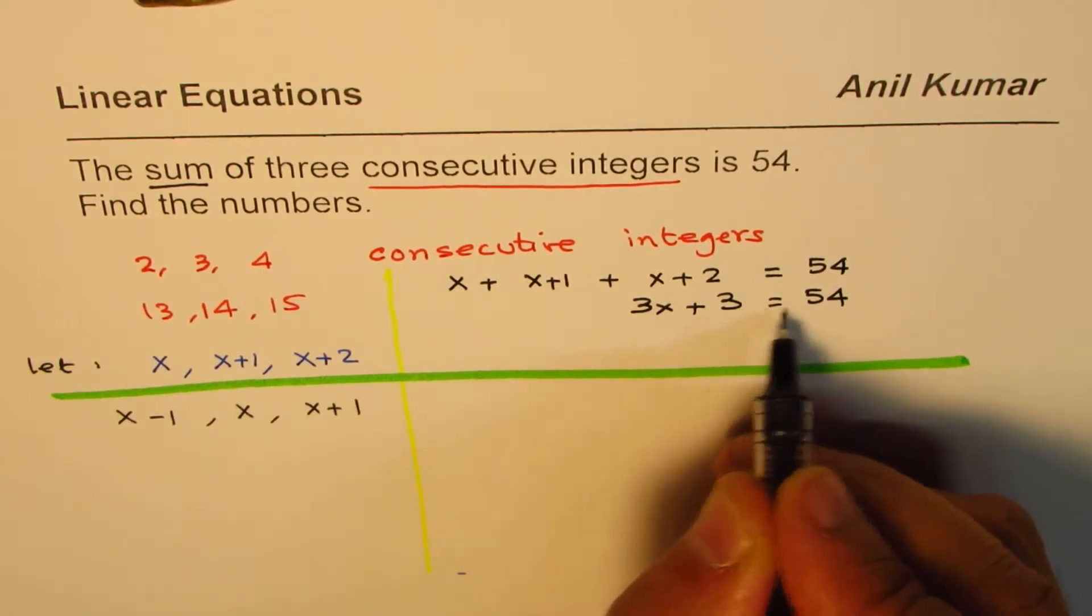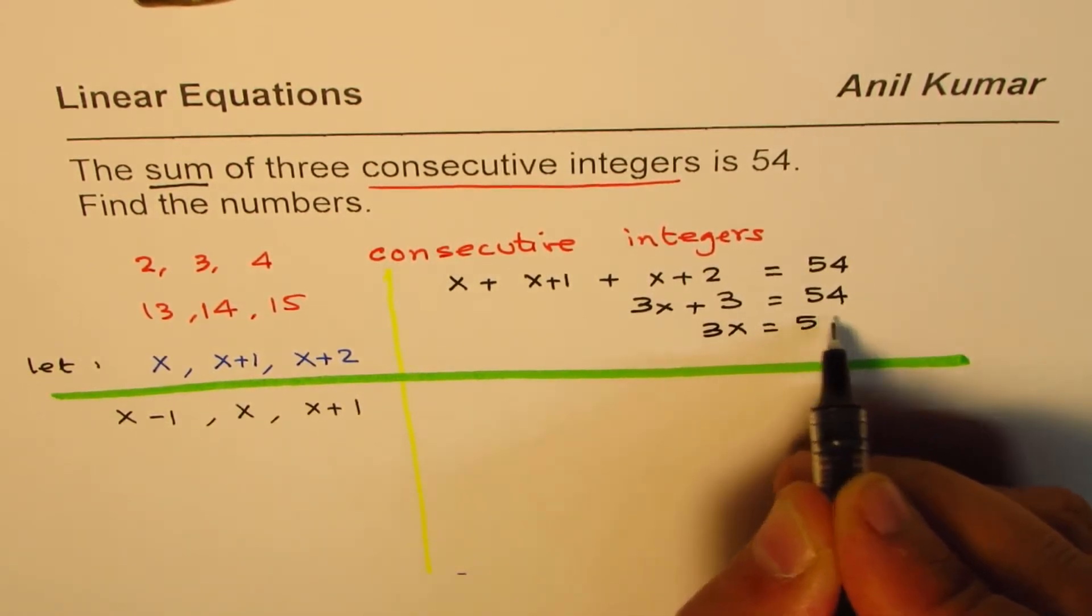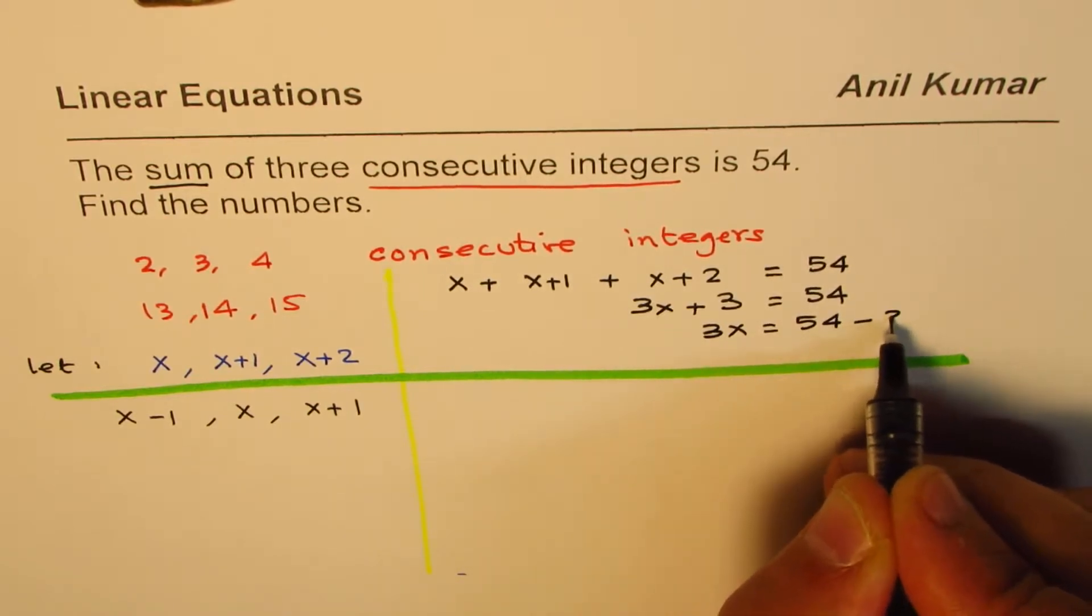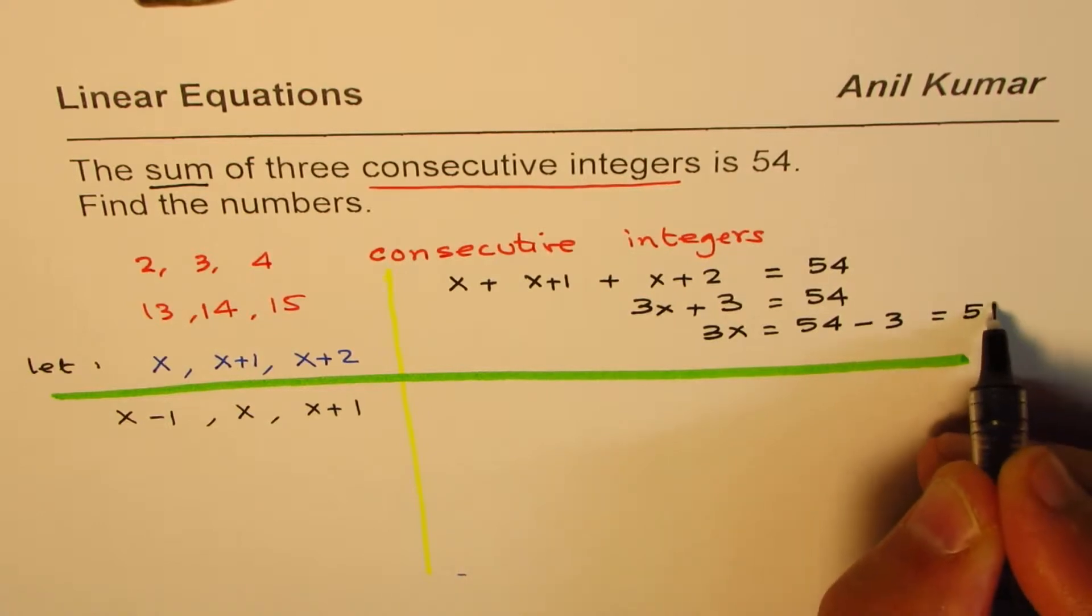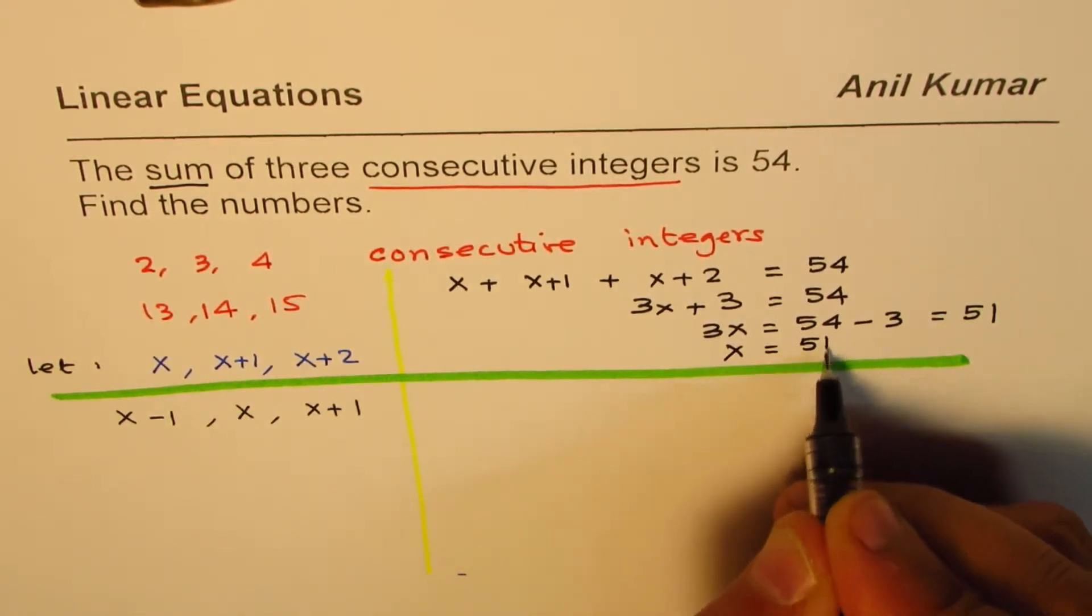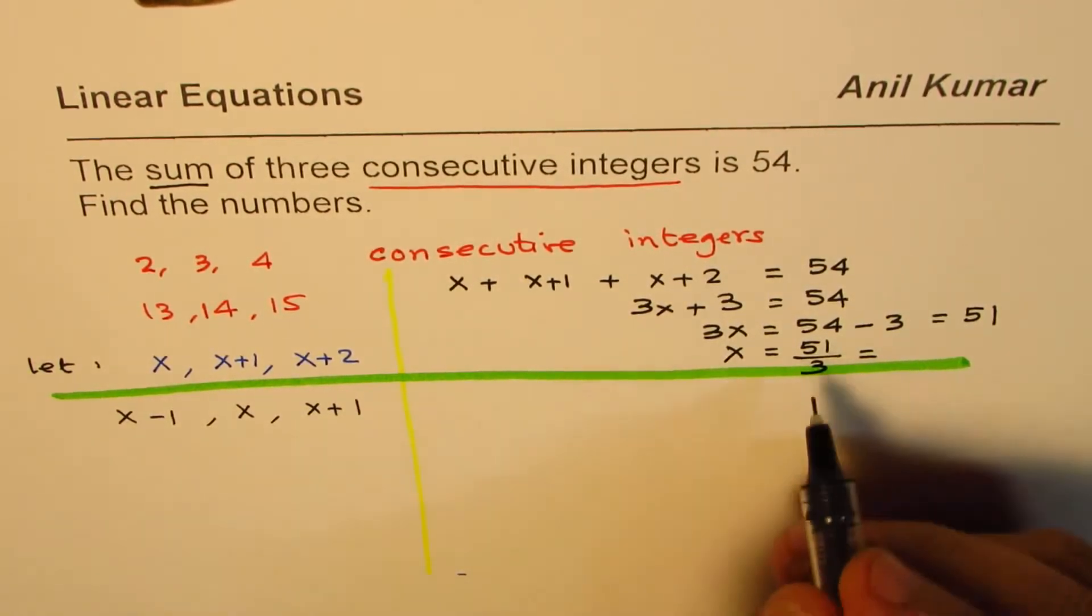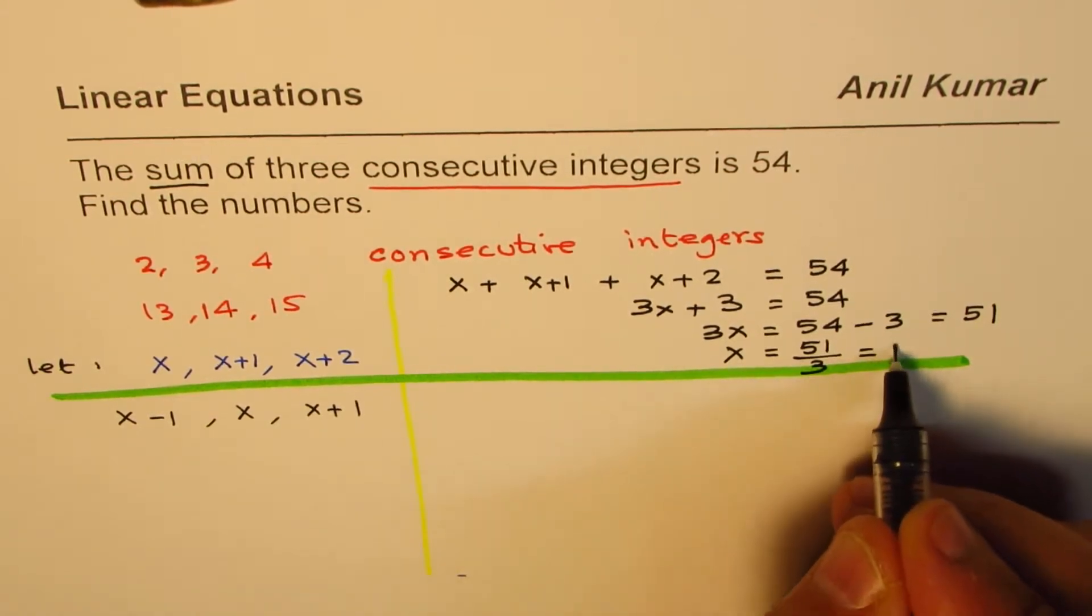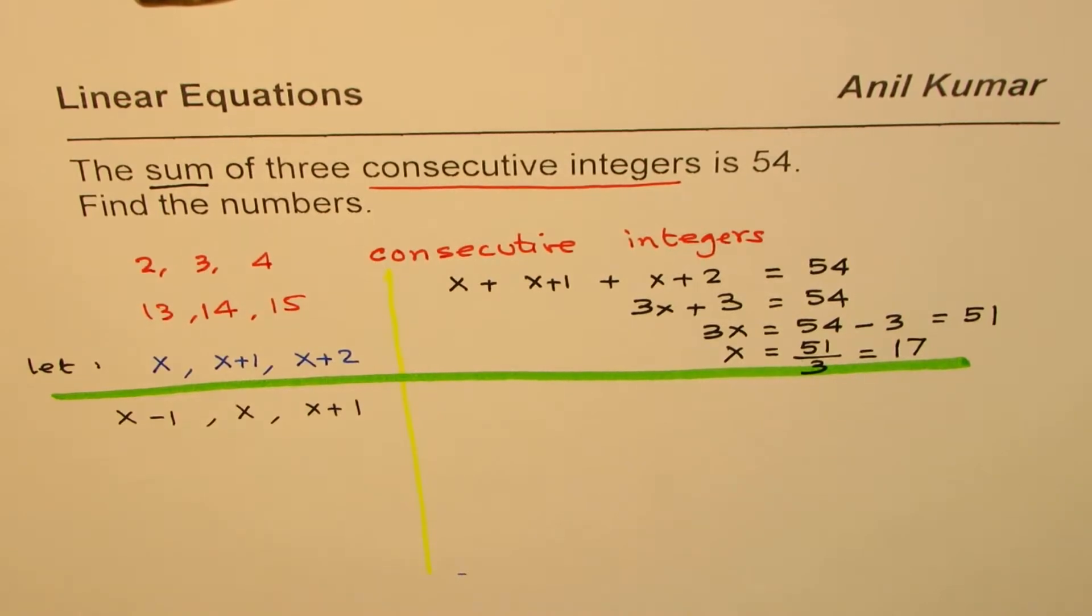Let us solve for x. So, we'll take away 3 from both sides. So, we have 3x equals to 54 minus 3. So, 54 minus 3 is 51. And x will be equal to 51 divided by 3. 51 divided by 3. So, that is 3 goes 1 time 21 is 7. So, we get x as 17.